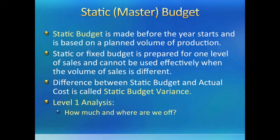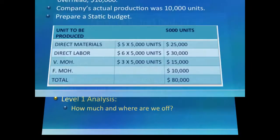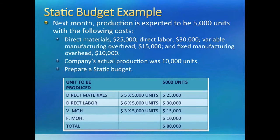Let us first learn to make a static budget and compare it with actual numbers to calculate static budget variance. It is a very basic analysis, but let us see what we can learn from it. The company plans to make 5,000 units and its manufacturing costs are given. Making a static budget is easy — put together all costs of production and we are done. Notice that we added a column in the middle to show the budgeted per unit cost for each input. Also note that we did not convert the fixed cost into a per unit number, because fixed cost will not change even if we change the number of units produced. Our static budget says we plan to spend $80,000 total to make 5,000 units.